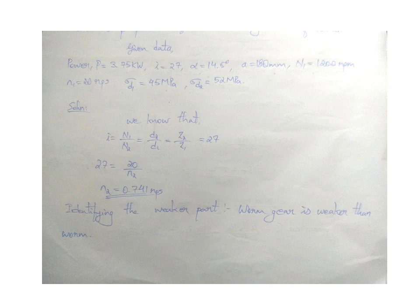Our first step in all our problems: we will use speed ratio. So by equating the speed ratio we get the speed of worm gear as 0.741 rps.